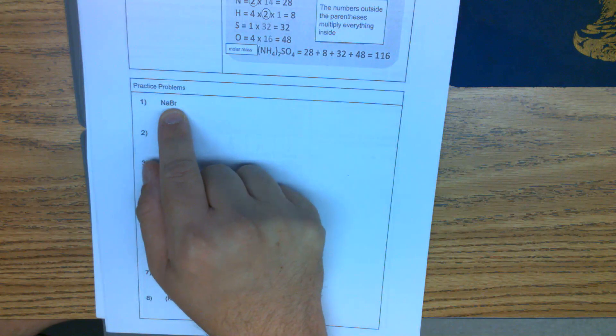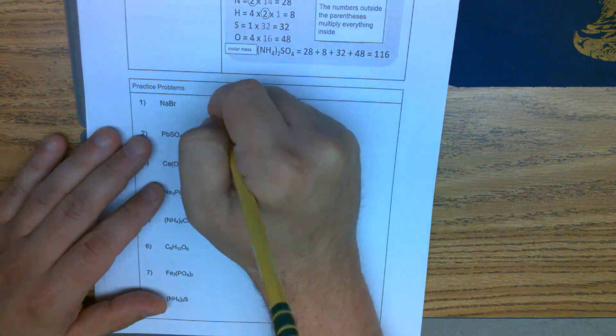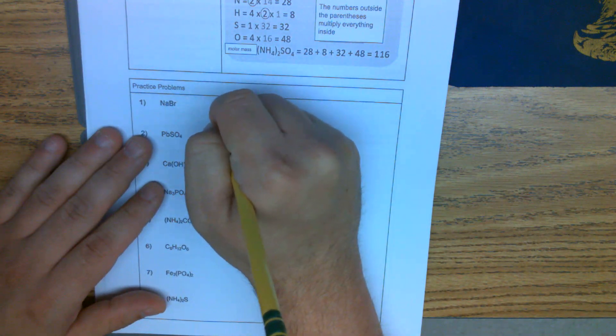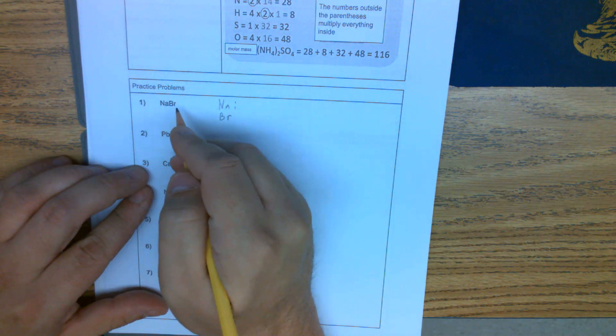In order to do molar mass, we're going to find both these elements on the periodic table and add up the masses of each. If we look at these, we have Na and we have Br. We have one Na and one Br.